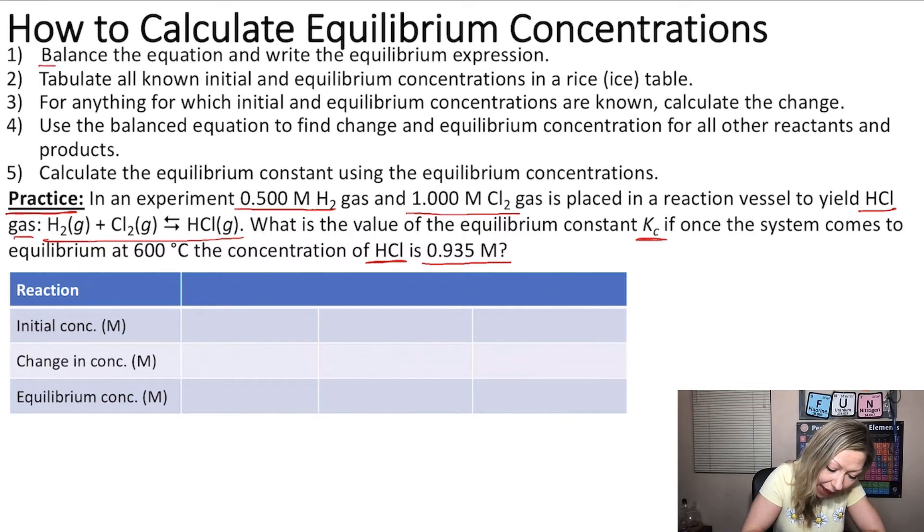Let's take a look at the steps that we need to do to calculate Kc. First we need to balance the equation. So let's take a look at it. Is this balanced? No, it's not. We need 2 mols of HCl right here.